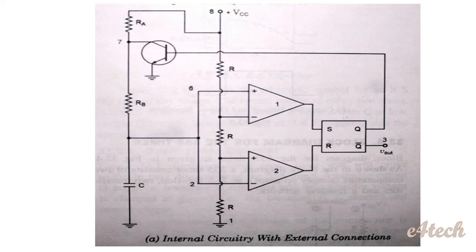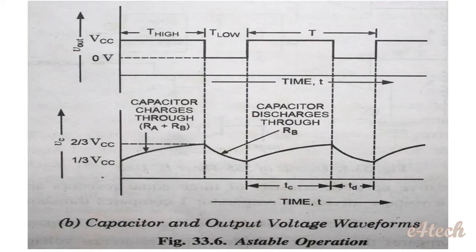After this continuous charge and discharge cycle, the circuit generates a rectangular waveform. No external trigger is needed. The capacitor charges from 1/3 VCC to 2/3 VCC for the high period, and discharges from 2/3 VCC back to 1/3 VCC for the low period, continuously generating a rectangular waveform.